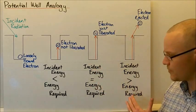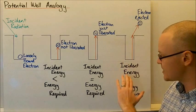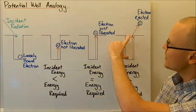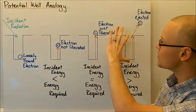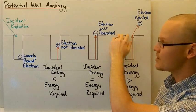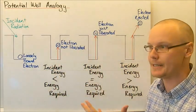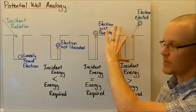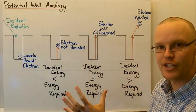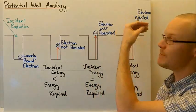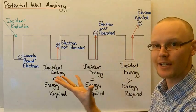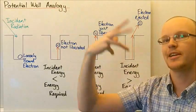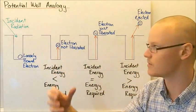The final case is that if the incident energy is greater than the energy required, some of that energy will be used to move the electron out of its potential well — its potential attachment to the metal. The leftover energy will be imparted to the electron, and the electron will be ejected with some kinetic energy — it will have some velocity as it leaves the metal.